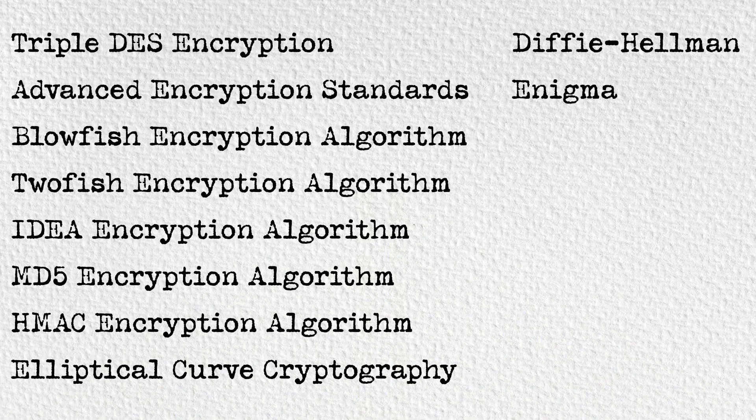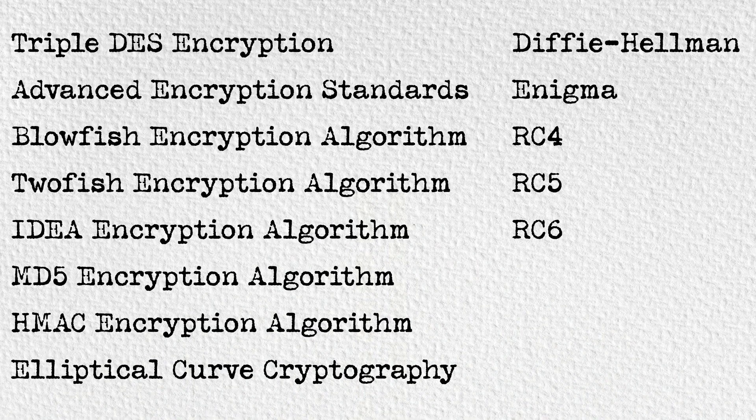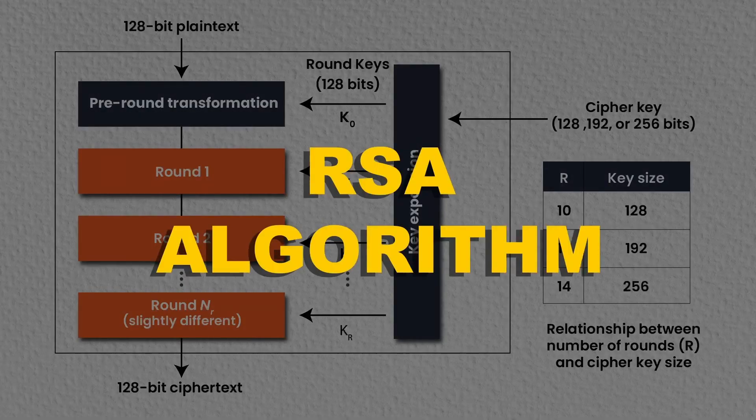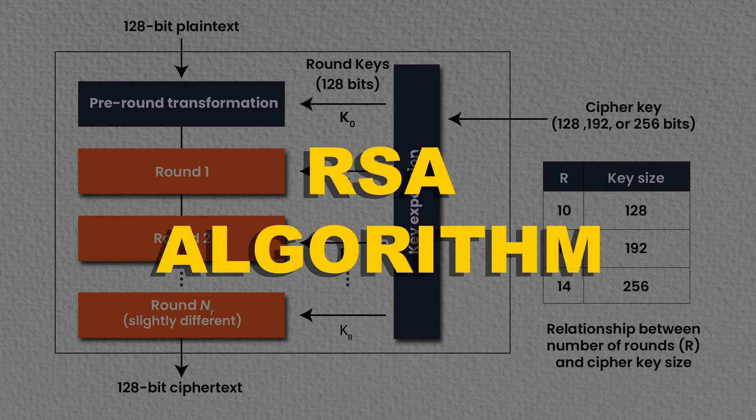How do I make sure that I can encrypt a text and make it extremely impossible for someone to decode it? Among the many encryption methods there are today, the RSA algorithm is one of the most widely used.